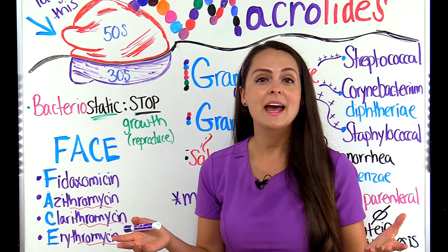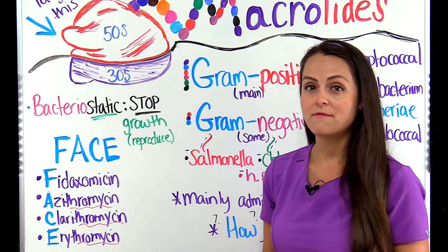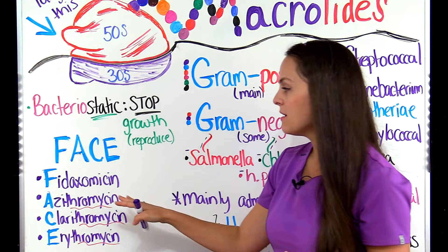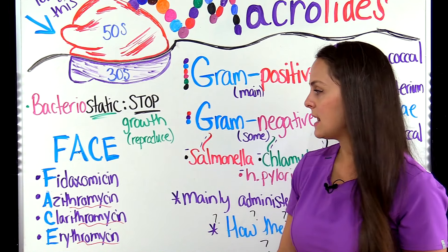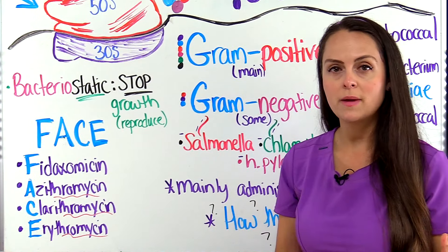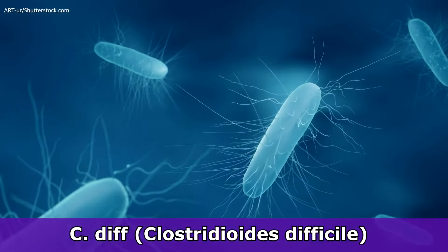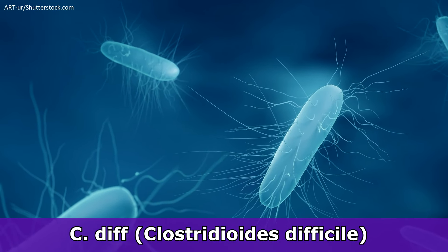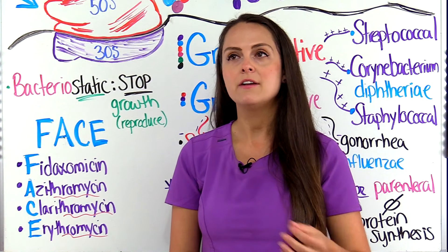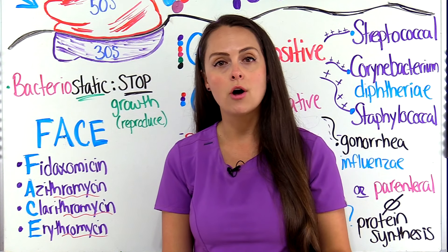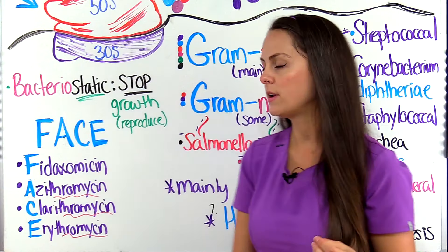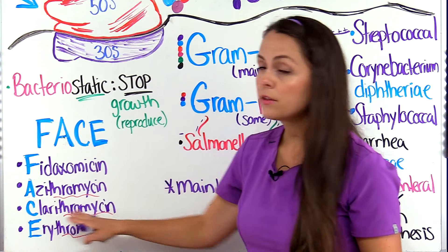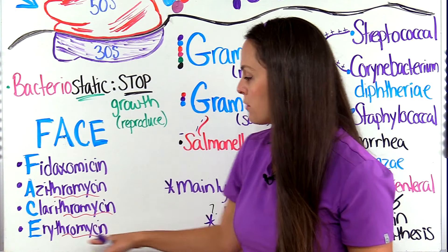Now let's talk about the medications that are part of the macrolide family. To help us do that, we're going to remember the word FACE. F is for Fidaxomycin, and this is actually new to the group — it's used in cases of C. diff, which is the super infection that invades the gut and causes profuse diarrhea, unfortunately from prolonged usage of certain antibiotics. Then we have Azithromycin, Clarithromycin, and Erythromycin.